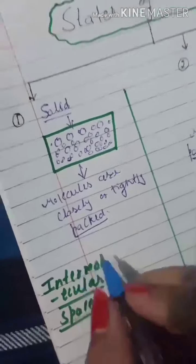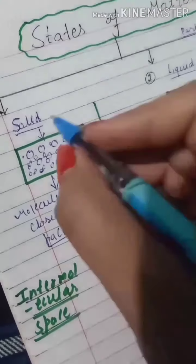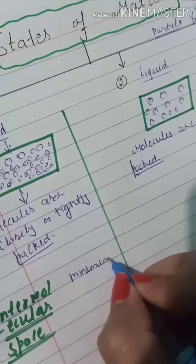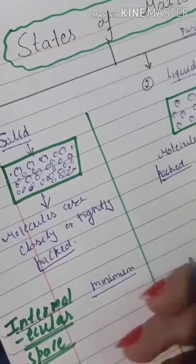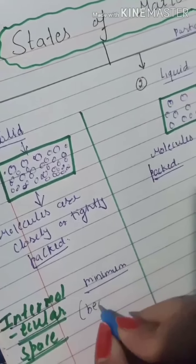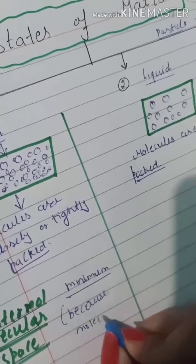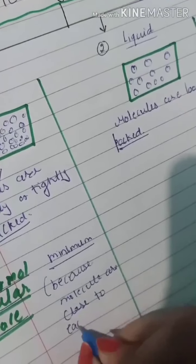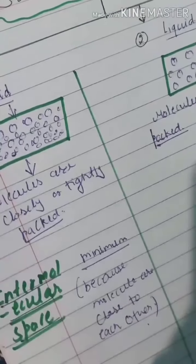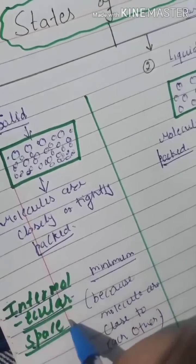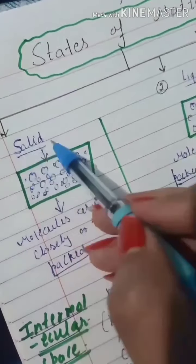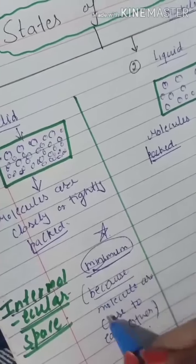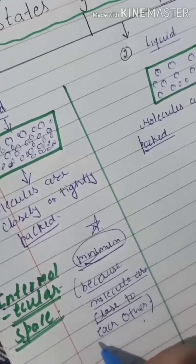Intermolecular space in solid is minimum because molecules are close to each other.